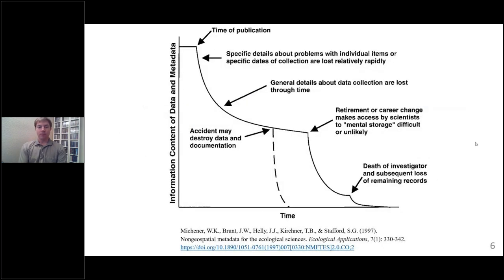This is another well-known chart — if you're familiar with the metadata world, you may have seen this before from 1997. William Michener and colleagues presented an overview of metadata within ecology. On the left, you have information content of data and metadata, which progressively goes down over time. Starting at the time of publication, you still have a lot of knowledge of data and metadata, but as soon as you publish a paper, you may kind of start forgetting.